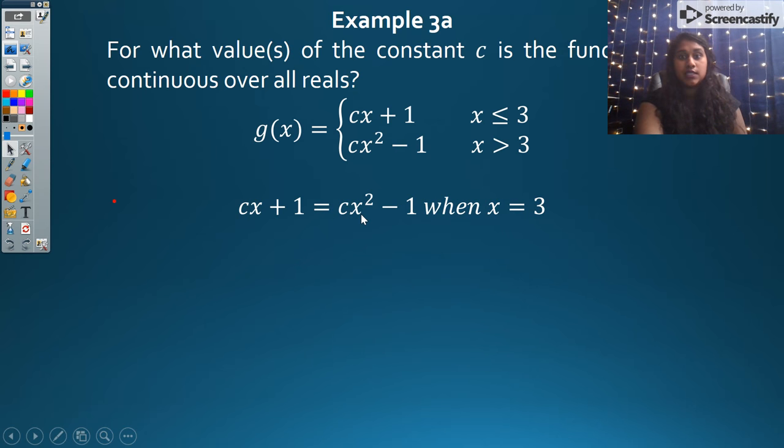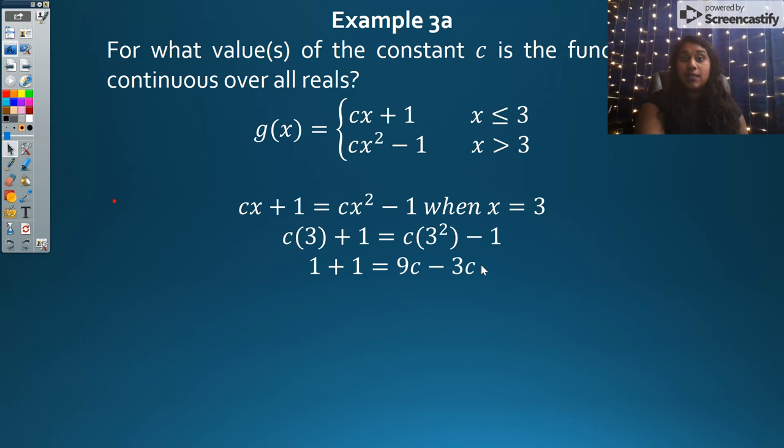Let's set them equal. cx + 1 equals cx² - 1. We are solving for x = 3. If I know what x equals, I just plug that in. I'm going to separate until I get my c's to one side. Recall, solving means get it by itself. In this case, we're talking about c. I got down to c equaling 1/3.